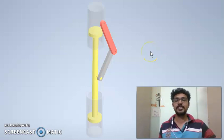Hello friends, we are now discussing the fourth inversion of a single slider crank chain. The fourth inversion is that mechanism in which the fourth link is fixed.